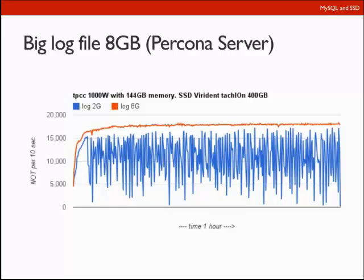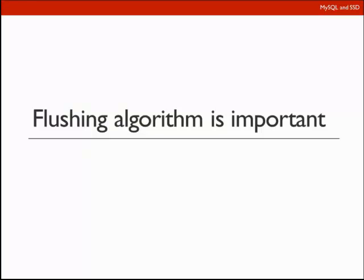The flushing algorithm is also important. In Percona Server, we have done a lot of research on how to provide stable performance. Standard MySQL flushing algorithms are not able to provide stable throughput — you see periodic drops. In Percona Server, we provide a new adaptive checkpoint method called 'keep average,' which allows you to achieve better and more stable performance.